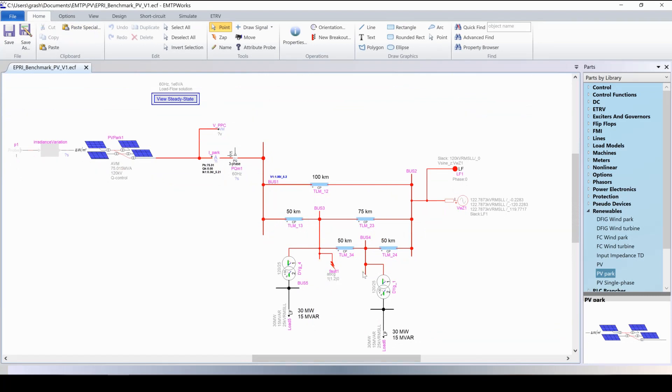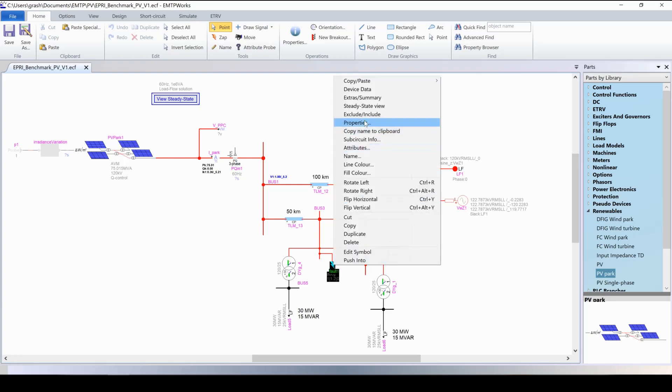This example consists of a PV park of 75 MVA connected to 120 kV transmission grid. In the original example, a fault is applied here at one second, but we will remove the fault for this demonstration.